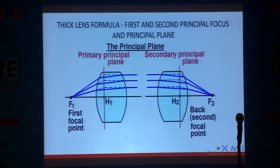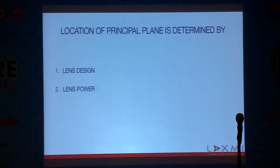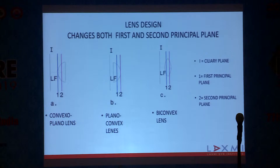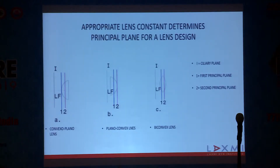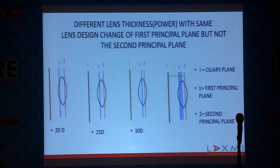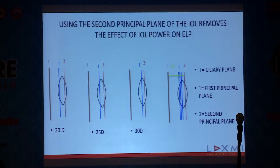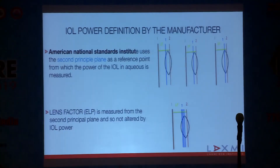In a thin lens, the principal plane is the same for both the first and second principal focus. Whereas in a thick lens — which is more practical for IOLs — the first and second principal planes are different, and their locations are determined by lens design and lens power. For the same power, the position of the first and second principal planes changes depending on whether the lens is plano-convex or biconvex. Different IOL powers with the same lens design can change the first principal plane but not the second principal plane. So if we use the second principal plane for IOL calculation, the effect of IOL power on ELP is negated.